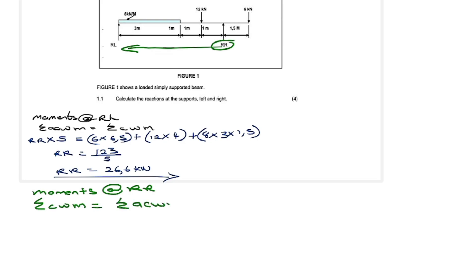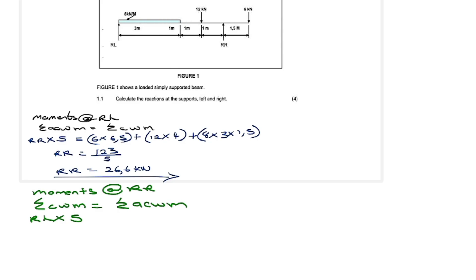The clockwise force is RL. So: RL × the distance from RR, which is 3 + 1 + 1 = 5. So we write: RL × 5. Now let's check the UDL — standing on RR, the UDL on this section is going anti-clockwise, so we ignore it for the clockwise side.